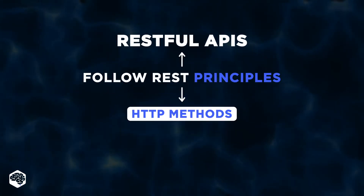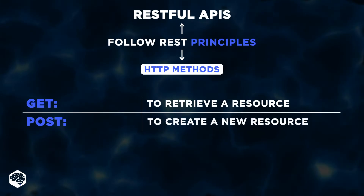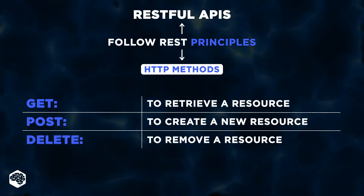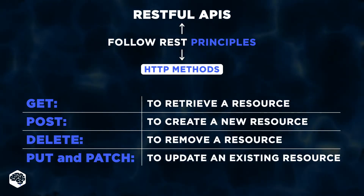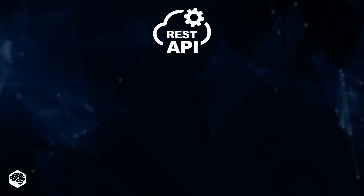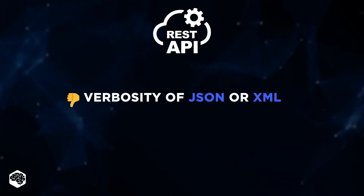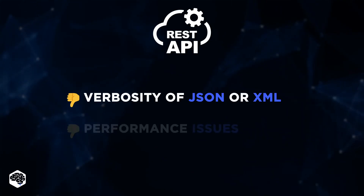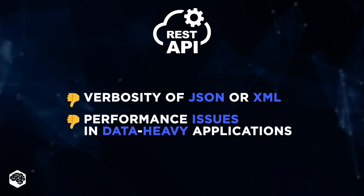These methods include GET to retrieve a resource, POST to create a new resource, DELETE to remove a resource, and PUT and PATCH to update an existing resource. But, as with any superhero, REST has its kryptonite: the verbosity of JSON or XML. When we worked on data-heavy applications, we noticed that REST's performance could sometimes falter, being a bit of a chatterbox.